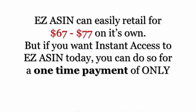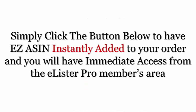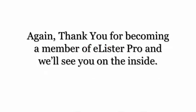Easy ASIN can easily retail for $67 to $77 on its own, but if you want to get instant access to Easy ASIN today you can do so for a one-time payment of only $29.99. Simply click the button below to have Easy ASIN instantly added to your order, and you will have immediate access from the eLister Pro members area. Thank you for becoming a member of eLister Pro, and we'll see you on the inside.